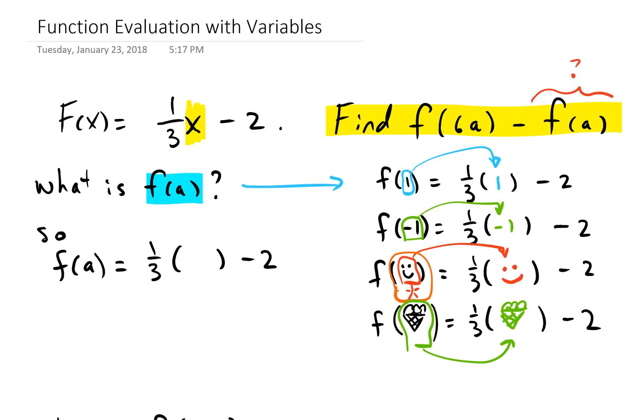So if we now go back to our original problem, what is f of a? Well, now we just know all we do is just plug in a wherever there was an x, so we have 1/3 times a minus 2, and that's it.